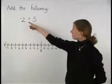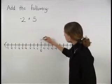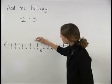In this problem, we have negative 2, so we begin at 0 and move 2 units to the left.